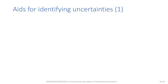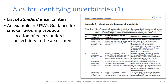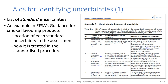There are some tools that can help you to identify uncertainties. When using a standardized procedure, a list of the standard uncertainties that are addressed by it may help you to identify any non-standard uncertainties that are present. An example of such a list is included in the 2021 guidance for smoke flavorings. This shows the location of each uncertainty in the risk assessment, how it is treated in the standardized procedure, and criteria for it to qualify as a standard uncertainty — to help identify when the uncertainty becomes non-standard in a particular assessment.